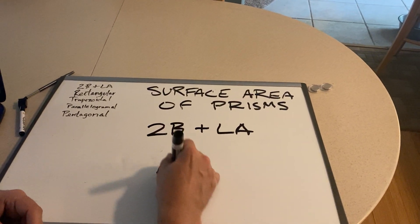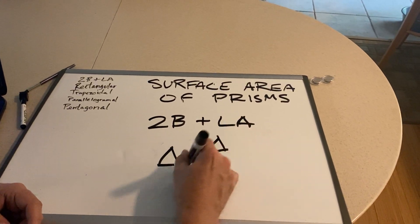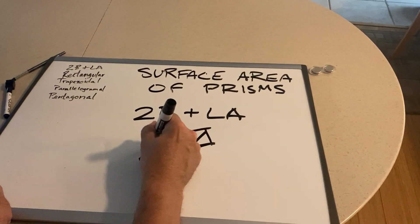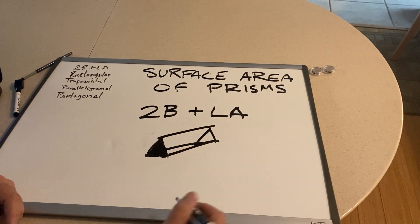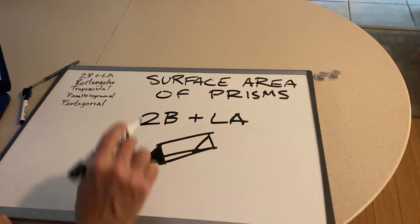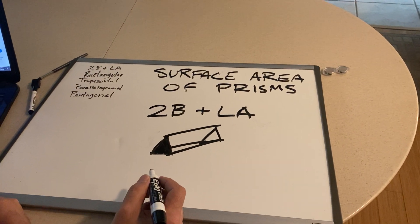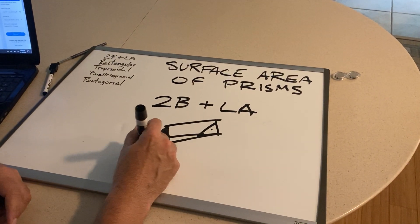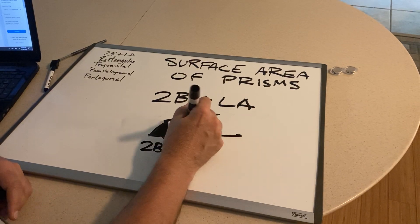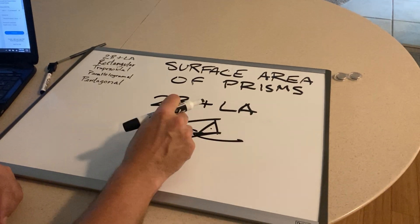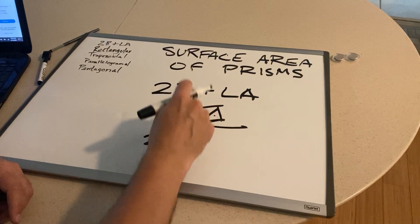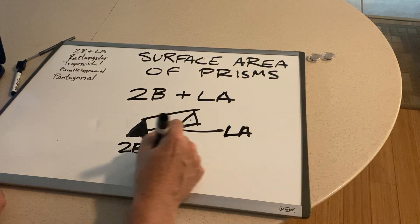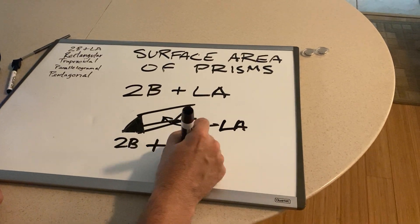What we meant by that — let's say we have a triangular prism, okay, it goes something like that. Then we take the area of the base, whatever that is. Big B stands for base area. We multiply it by two because there are two bases. And then whatever the lateral area is, which is the sum of the areas of the three rectangles that connect the two bases — this is our lateral area, so plus lateral area.